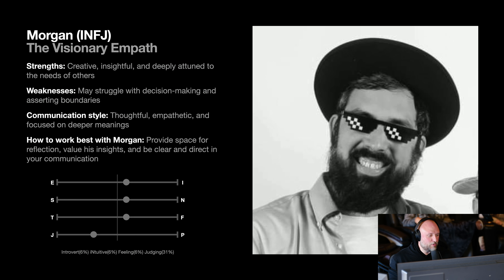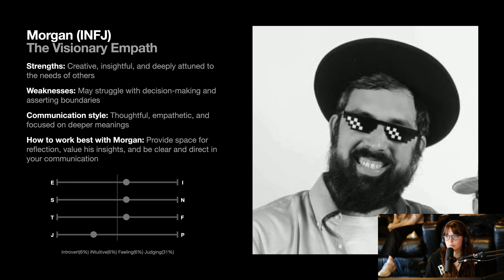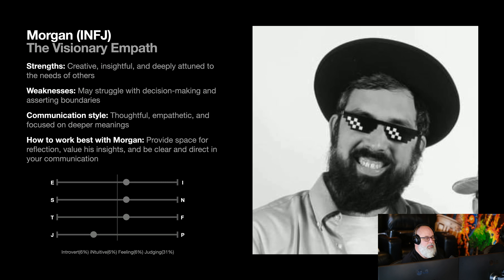Alright, here's Morgan — this is the one I've been waiting on! Morgan is an INFJ, the visionary empath. Strengths: creative, insightful, and deeply attuned to the needs of others. Weaknesses: may struggle with decision making and asserting boundaries. Communication style: thoughtful, empathetic, and focused on deeper meanings. The best way to work with Morgan: provide space for reflection, value his insights, and be clear and direct in your communication. What's interesting about Morgan is three of his four scores are at 6%, and then judging is high.